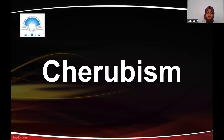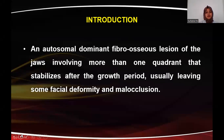The next lesion is cherubism. It is one of the fibro-osseous lesions, more commonly seen in children below the age of 5 years, characterized by bilateral swelling of the jaw giving children a characteristic cherubic-like appearance. This is an autosomal dominant fibro-osseous lesion involving the jaws and affecting more than one quadrant, which stabilizes after the growth period, usually leaving some facial deformities and malocclusion.